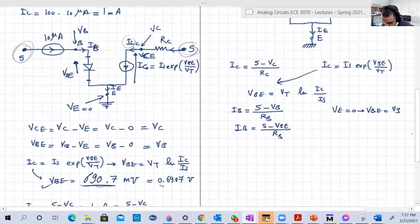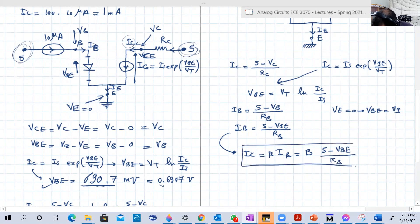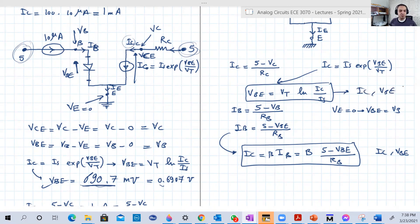Remember, VE is equal to 0, so from that VBE is equal to VB. So we can say that IB equal to 5 minus VBE over RB. And that's really good now, because from here, remember that IC is equal to beta IB. So we can replace IB with its equivalent equation, so this is beta 5 minus VBE over RB. Look, this equation has two unknowns, IC and VBE. And this equation again, two unknowns, IC and VBE.